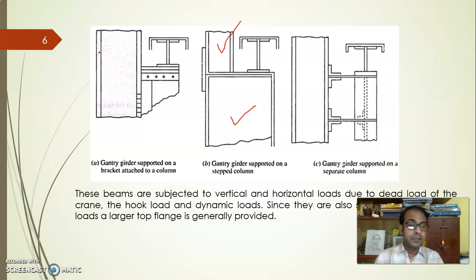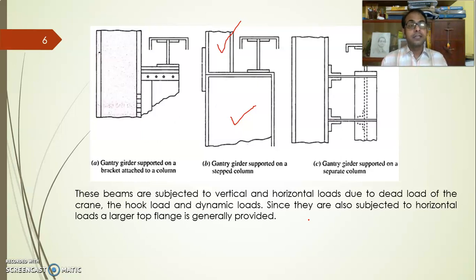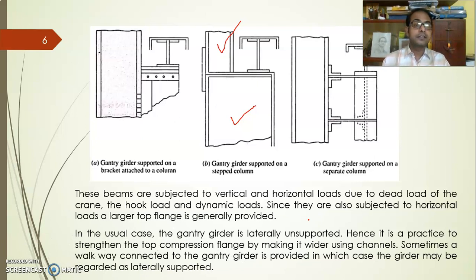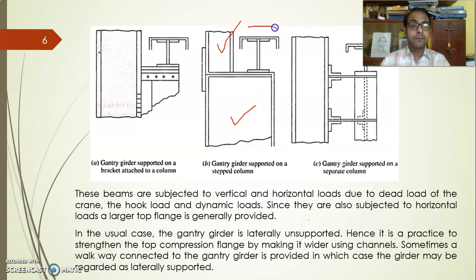The gantry girder is subjected to vertical and horizontal loads due to dead loads and live loads, and due to the movement of the crab unit and trolley unit there may be impact on the girder which must be considered. Generally the gantry girder is designed as a laterally unsupported beam, so we provide a wider top compression flange than the bottom flange, because the compression flange may fail due to instability or buckling.